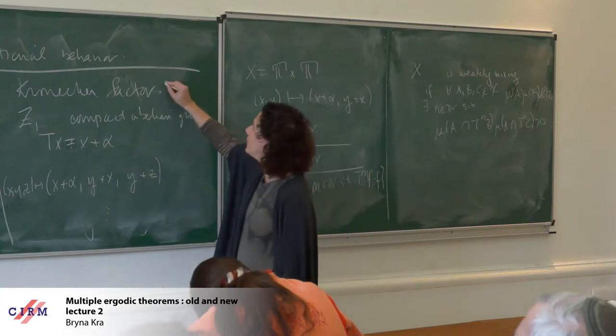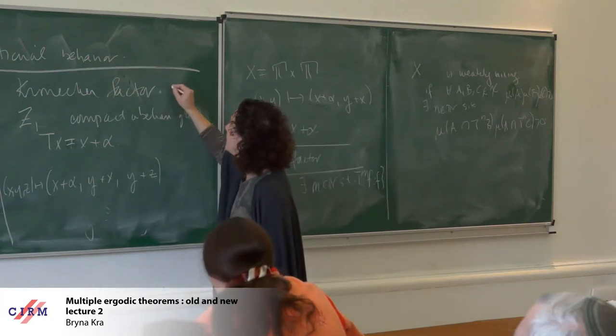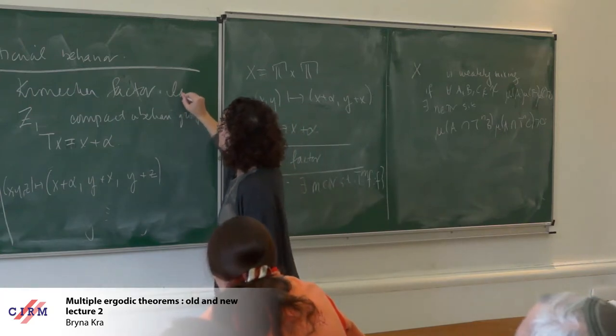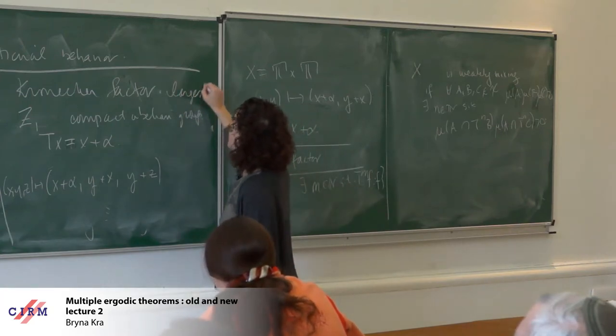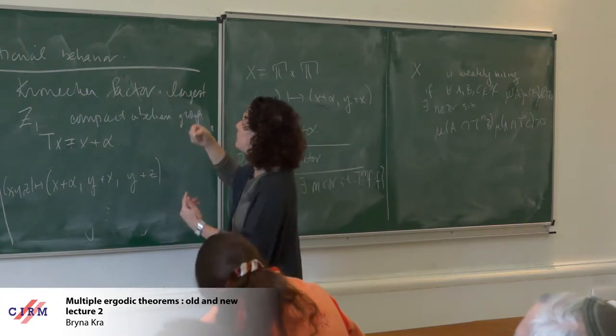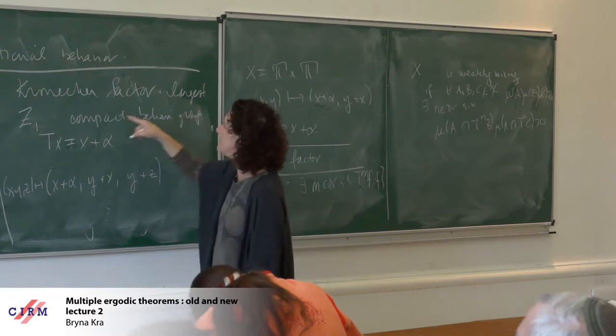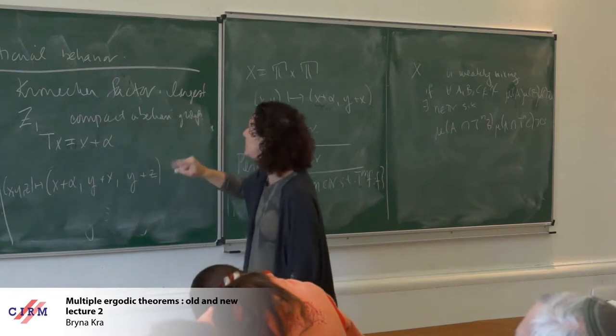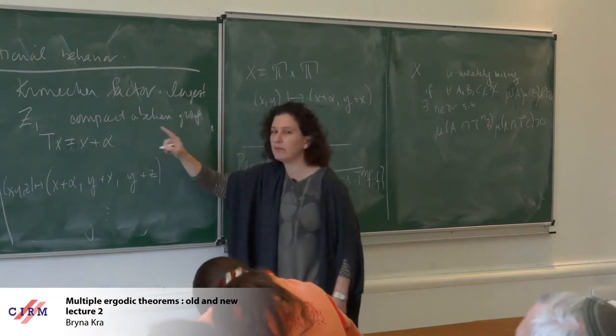The Kronecker factor should really be defined as the largest: it contains every other group rotation, so it's the largest compact abelian group factor.